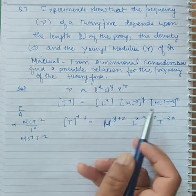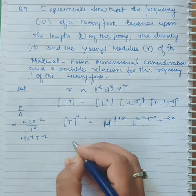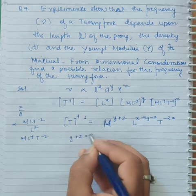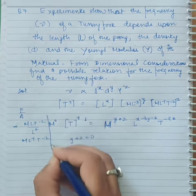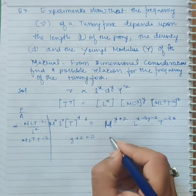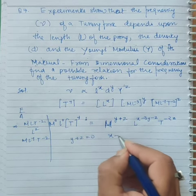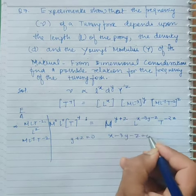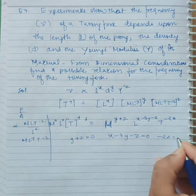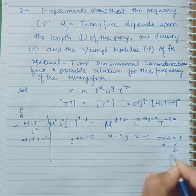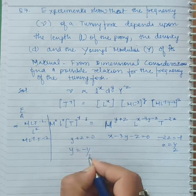Starting with the dimensions of M: y plus z equals 0 because there's no M on the left side. For L: x minus 3y minus z equals 0. For T: minus 2z equals minus 1, so z equals 1 by 2. And y equals minus 1 by 2.